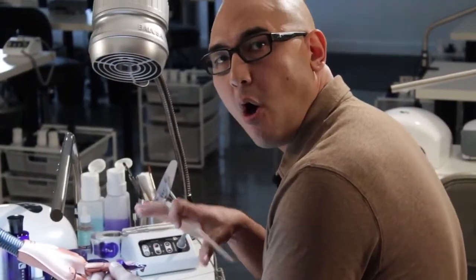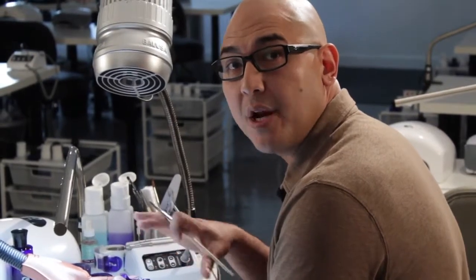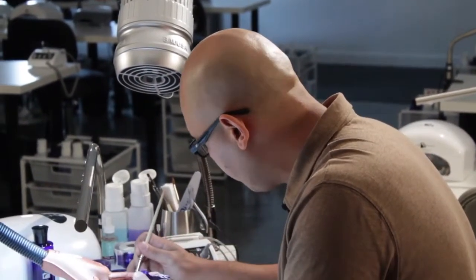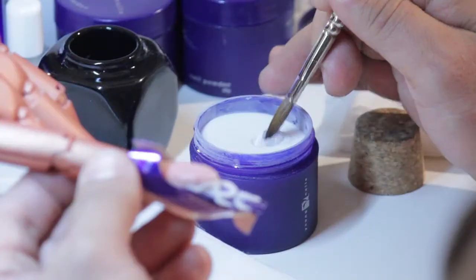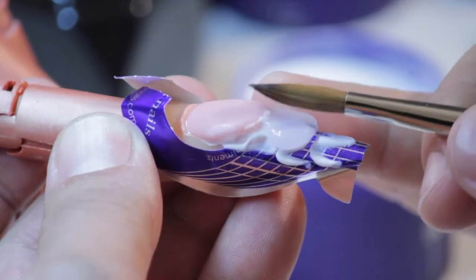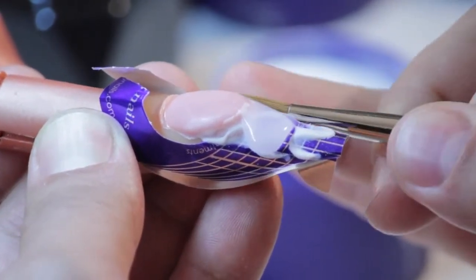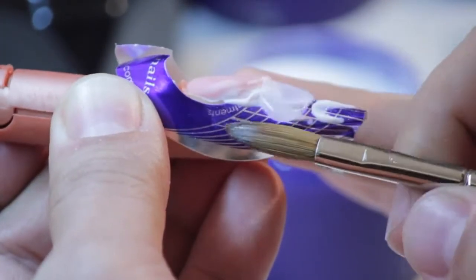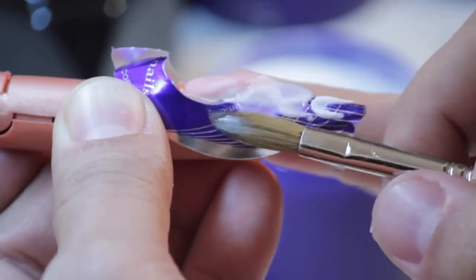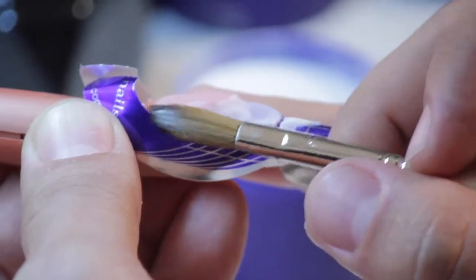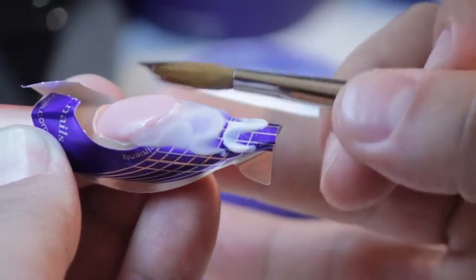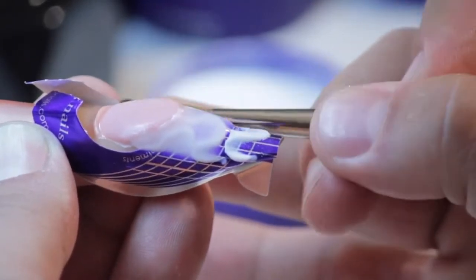Once we're done laying out all our ribbons with our Speed White, we're going to overlay it with Speed Clear. I'm going to come in with my monomer and get a nice fat pearl. I'm going to make sure that we overlay the white with a wet pearl. This will prevent any bubbles from getting into the clear product.